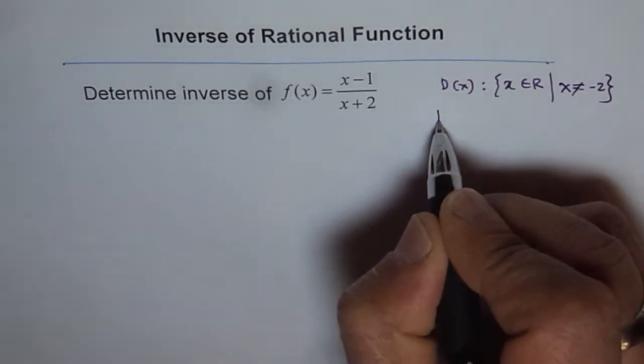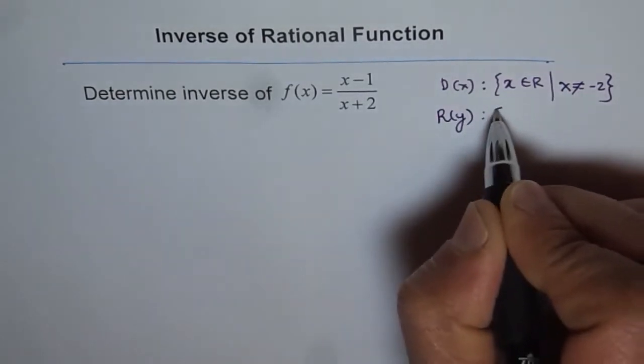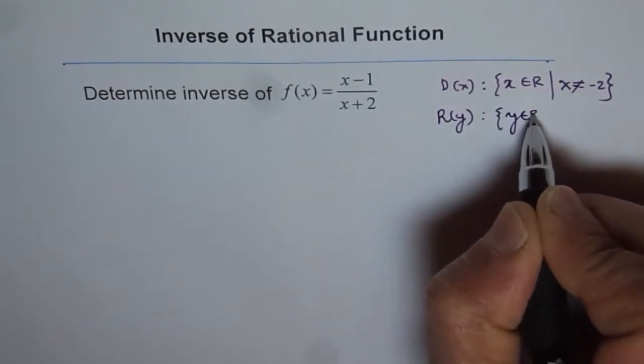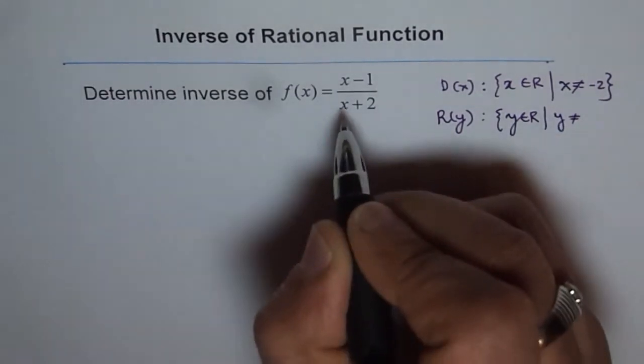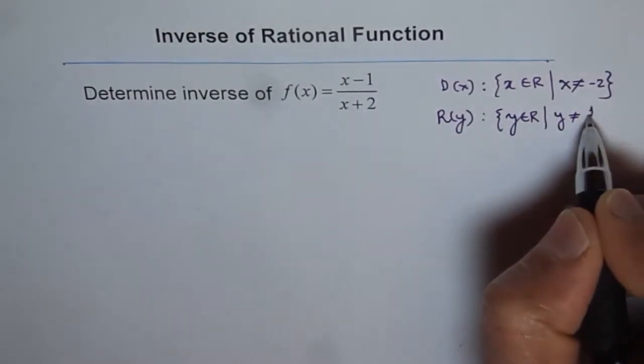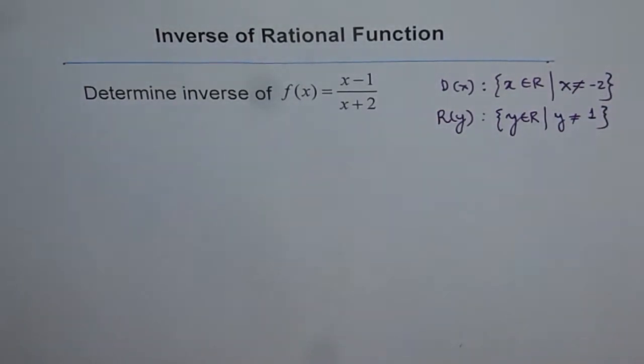And about the range, range of this function is that y belongs to real numbers but y will not be equal to, here the horizontal asymptote is at 1, y is not equal to 1.